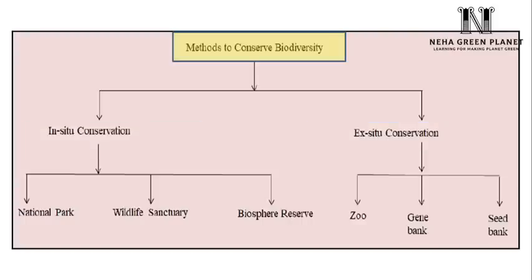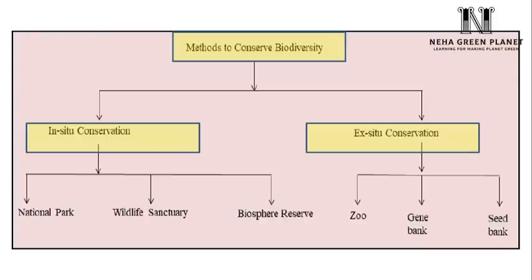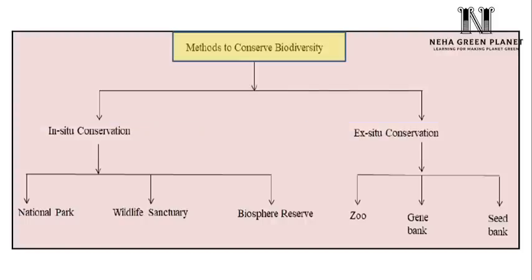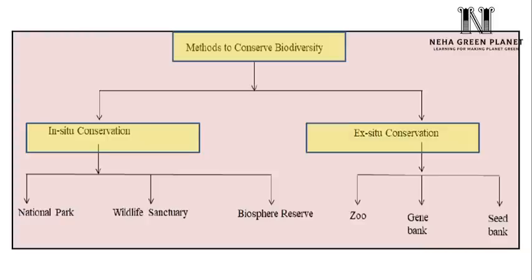To give one example of in-situ conservation: we know that forest is the natural space for tiger. So if we are protecting a tiger in its natural habitat — that means forest — then the method is known as in-situ conservation. However, if we protect the tiger in an artificial enclosure, for example a zoo, gene bank, or seed bank, then the method is known as ex-situ conservation. So in-situ means inside habitat and ex-situ means outside habitat.